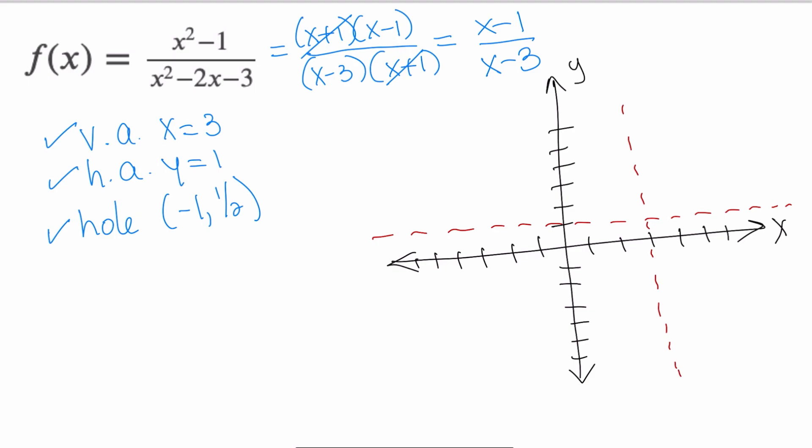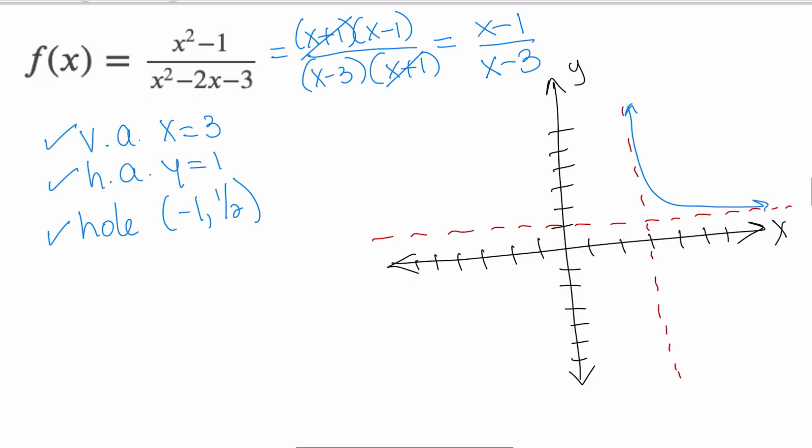My graph is going to behave something like this on the right hand side of that vertical asymptote, either above or below. And what I need to figure out is which one is it? Is it above that horizontal asymptote or is it below?